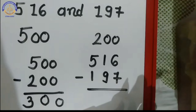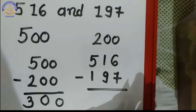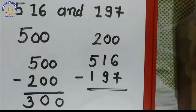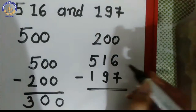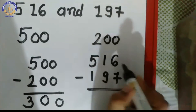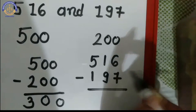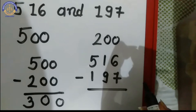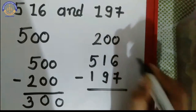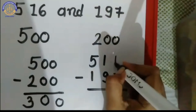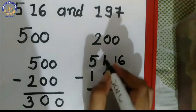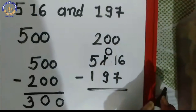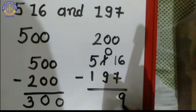Now, 6 minus 7 — is that possible? No, because we cannot subtract a bigger number from a smaller number. So we have to borrow. We borrow 1 from the tens place. The 6 becomes 16, and the tens digit becomes 0. Now, 16 minus 7 is 9.